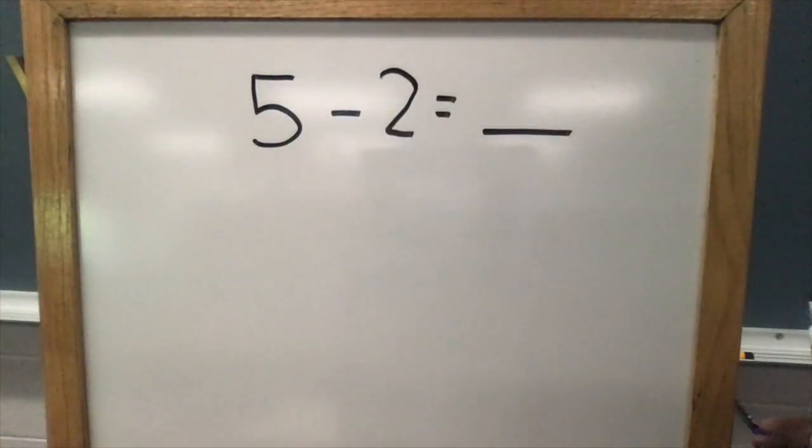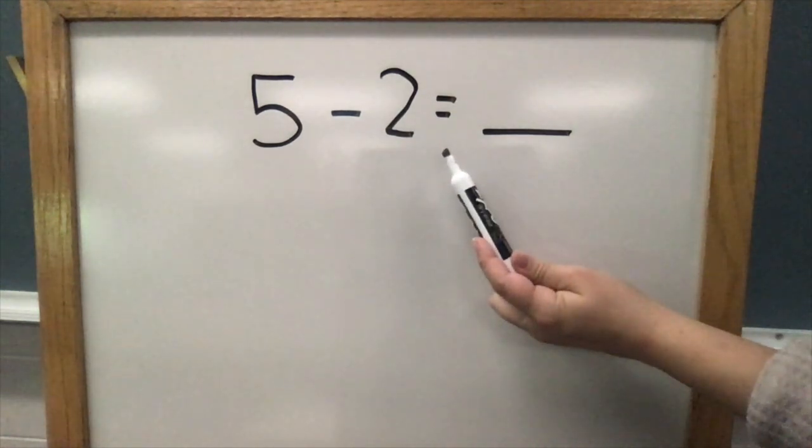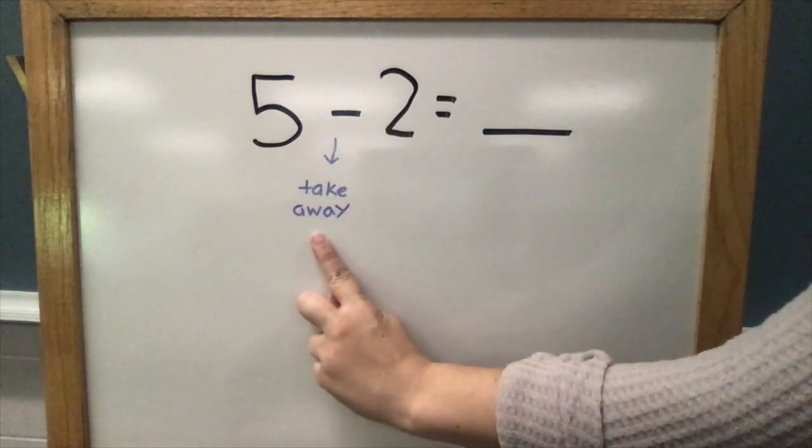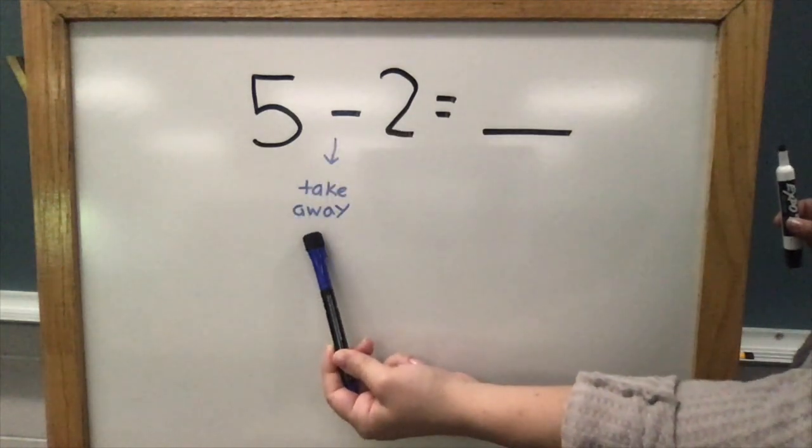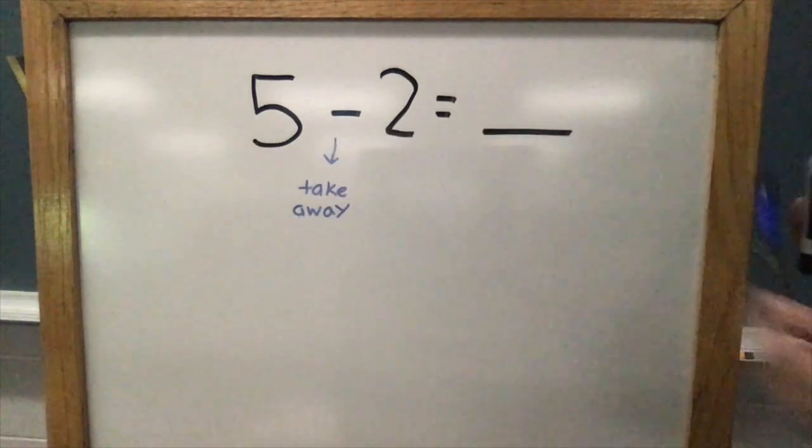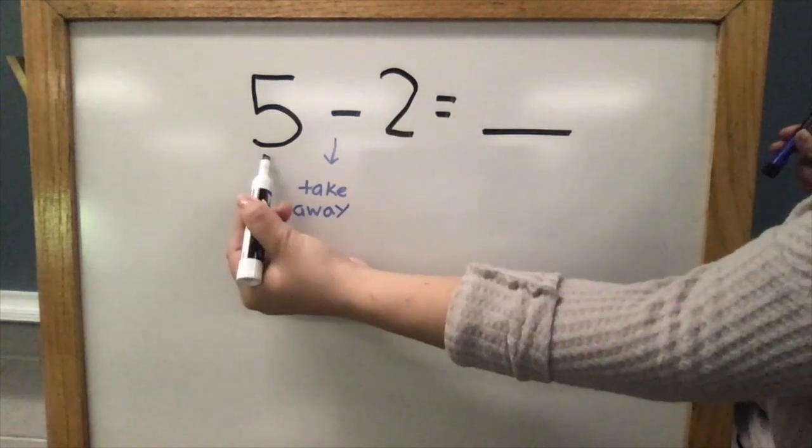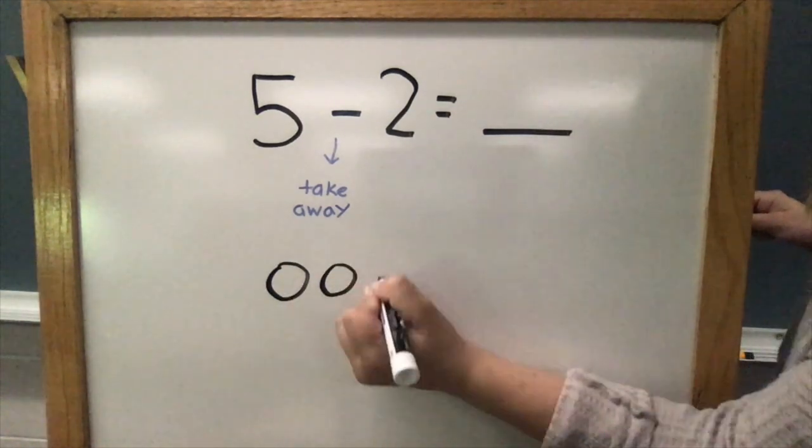Now that we reviewed some of that language, let's check out our first problem. Our first problem is 5 - 2 = __. Remember, the minus sign means take away. In other words, our problem is five take away two. To solve this problem, I need to start by showing the five that I begin with. I'm going to do this by drawing five counters.